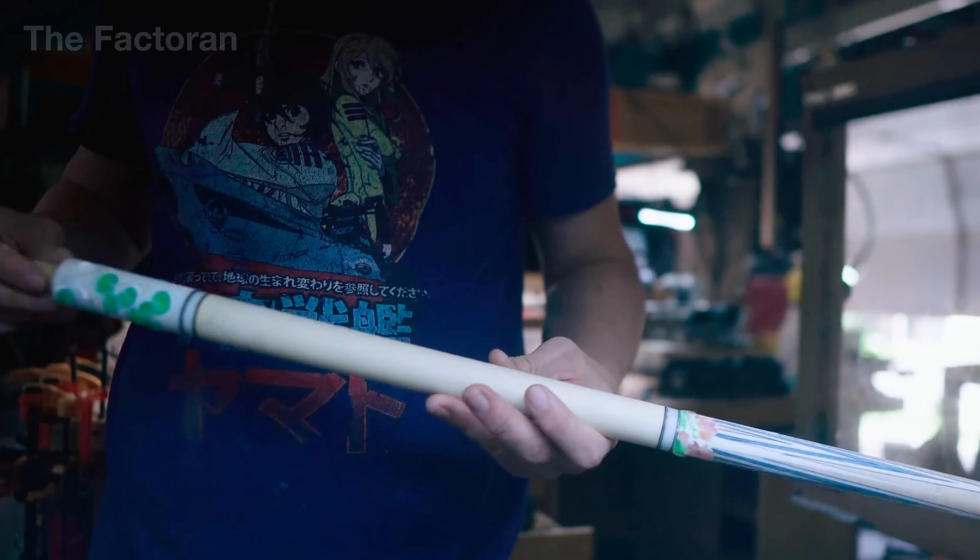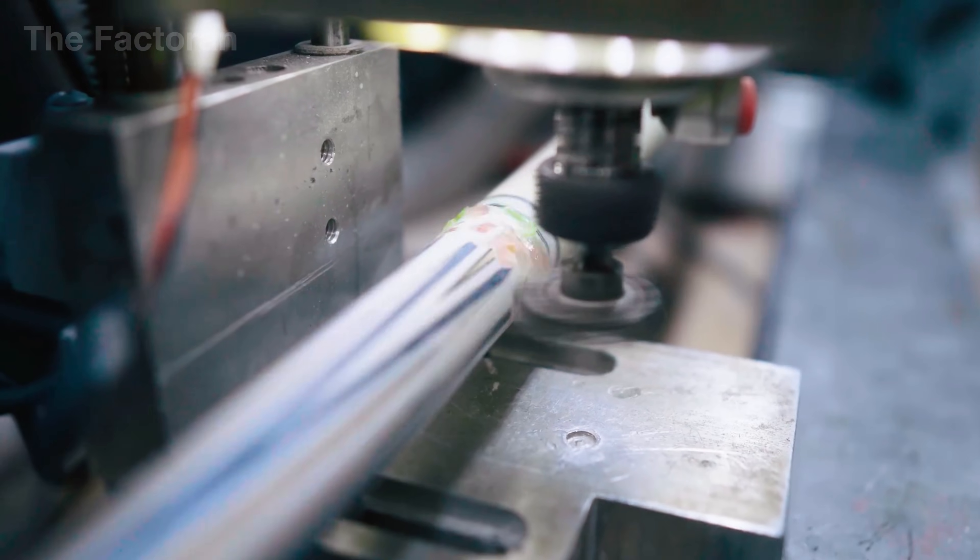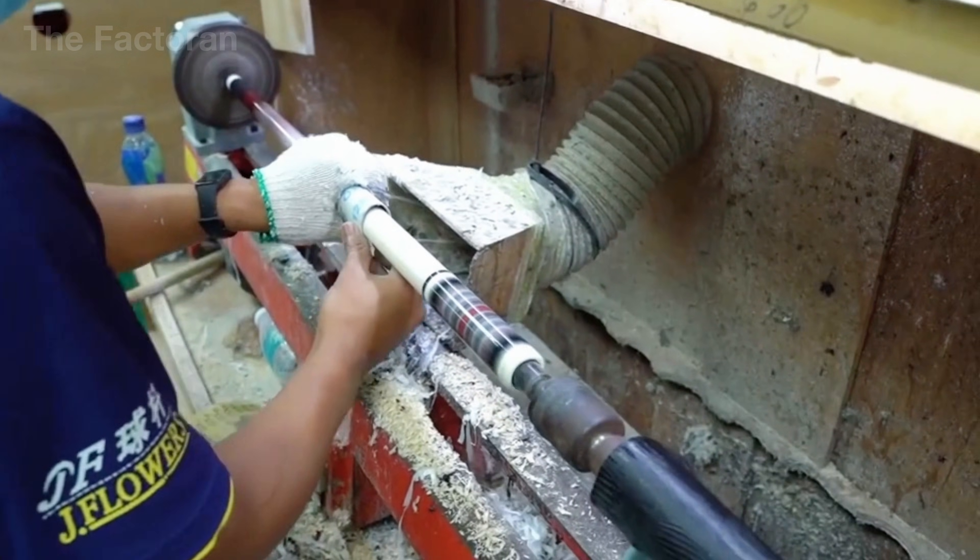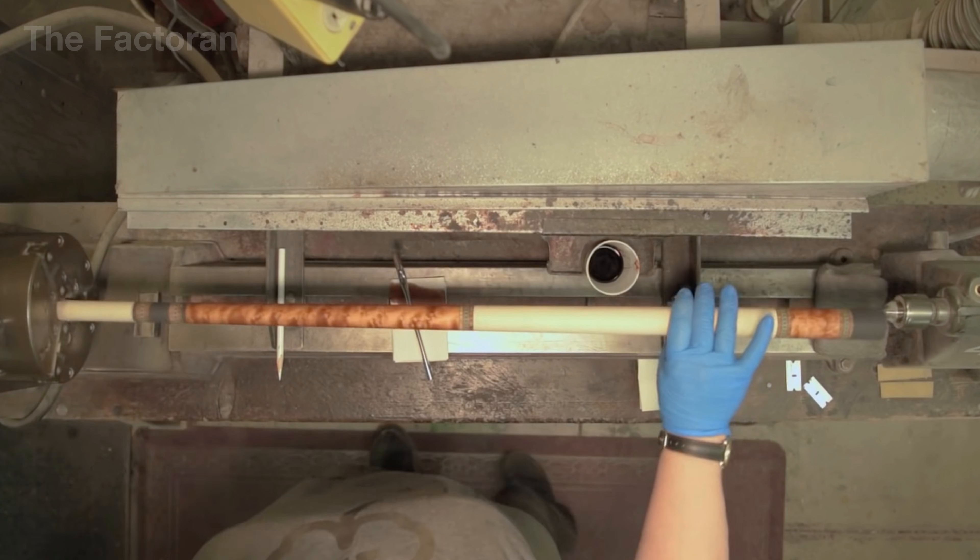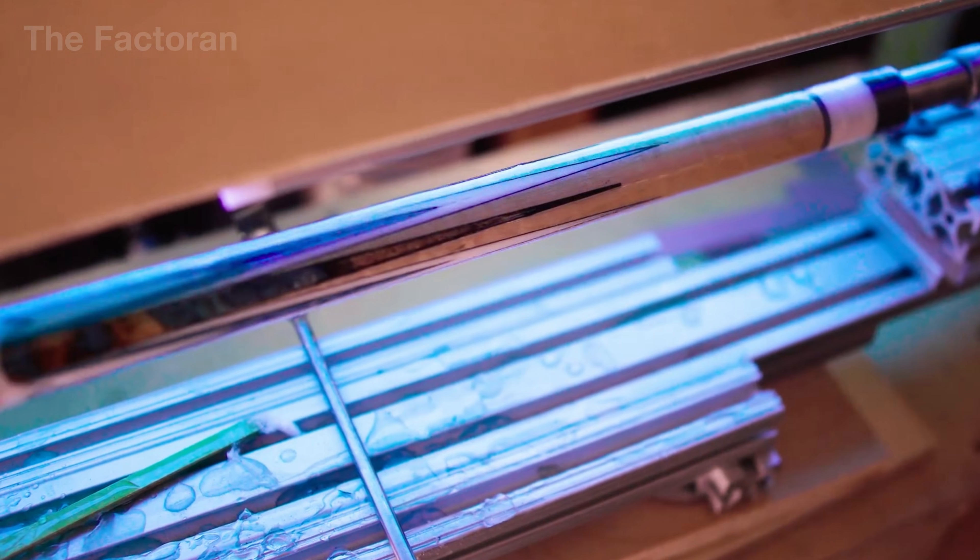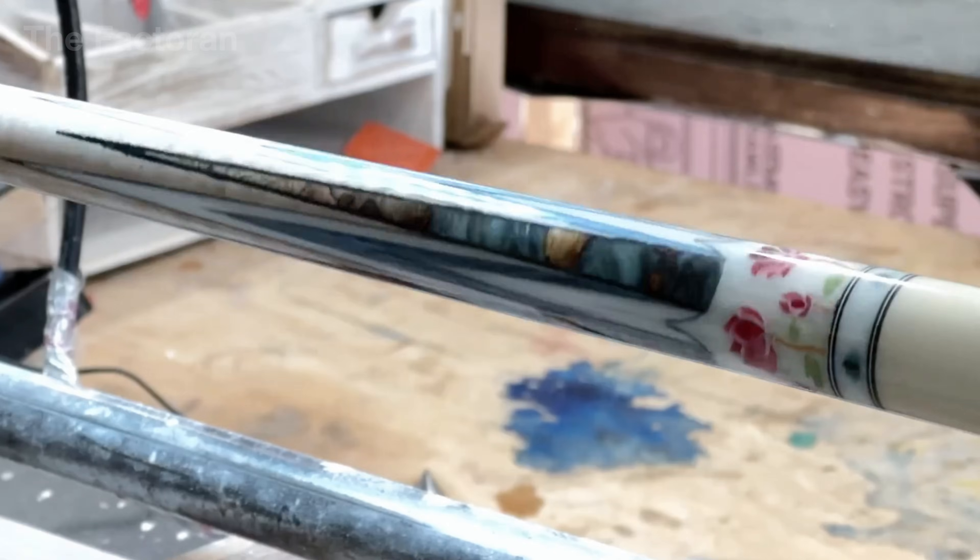Once the epoxy has fully hardened, the cue returns to the CNC lathe for fine turning, where excess inlay material is removed and the surface is refined back into a seamless, continuous cylinder. For highly intricate inlay designs, the rejection rate can reach nearly 50%, due to the extreme level of precision required at every step.